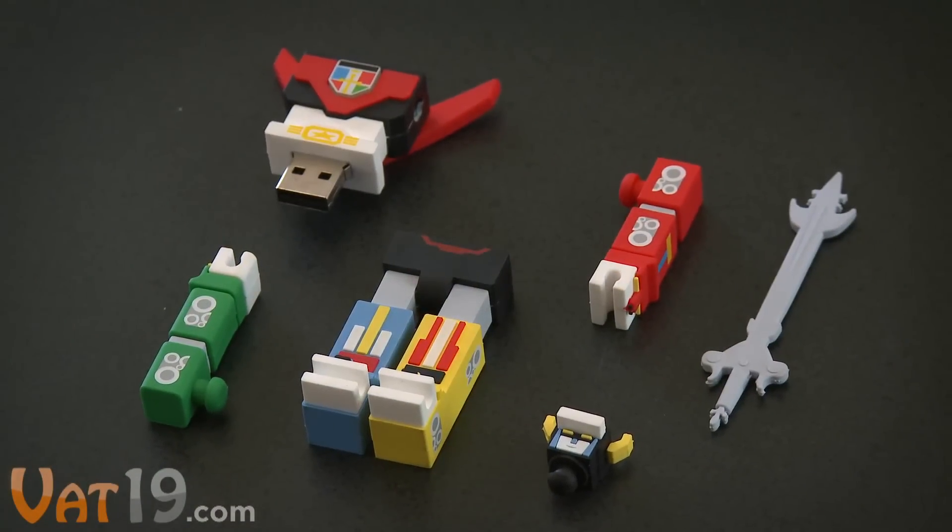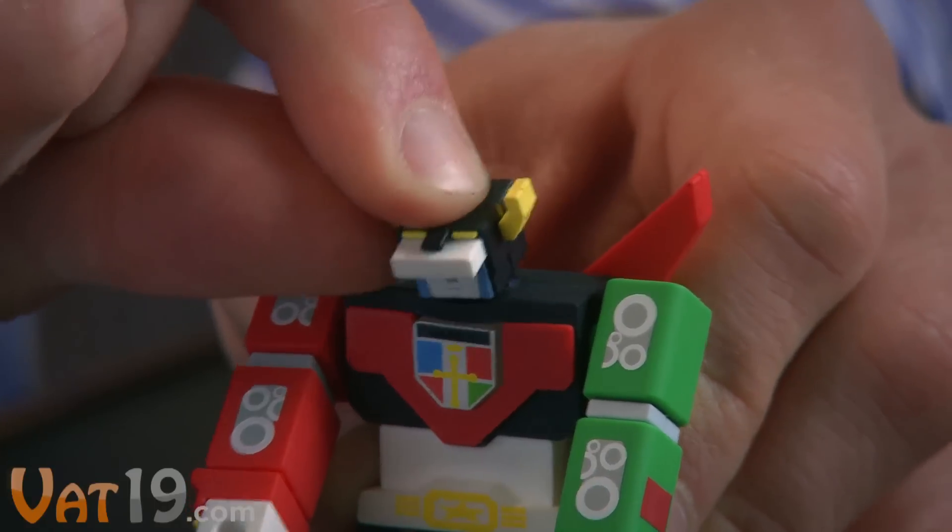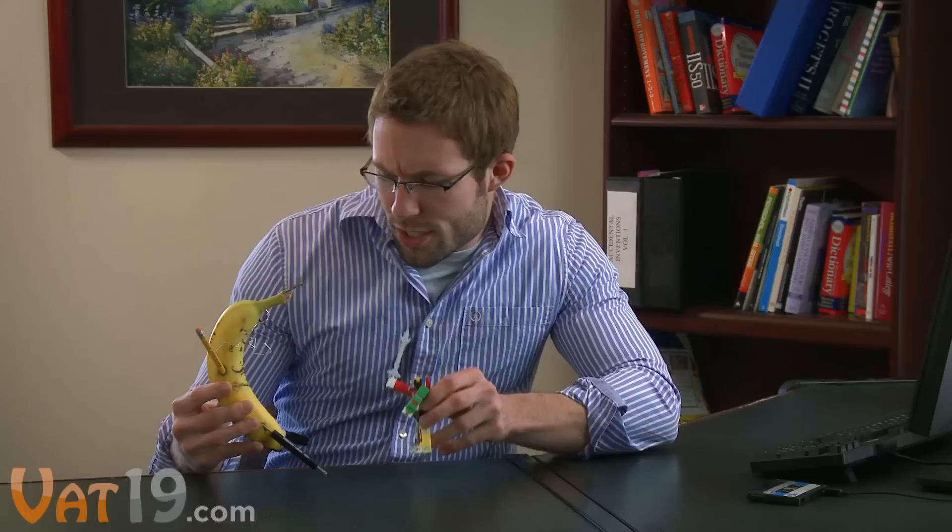The soft PVC parts snap together easily, so when it's time to defeat Zarkon's minions, you can form Voltron, then use the blazing sword to deliver the devastating final blow.